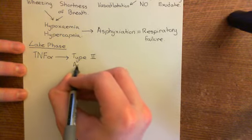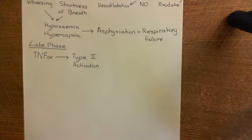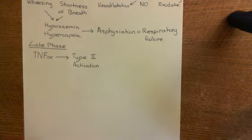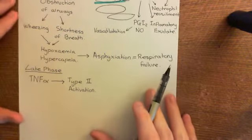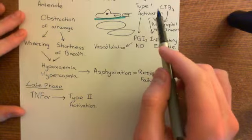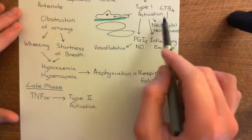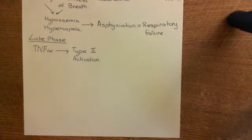Histamine caused type 1 activation; TNF-alpha causes type 2 activation, which takes much longer. Type 1 activation doesn't involve synthesis of new proteins — it involves synthesis of a few lipid molecules like prostacyclin and nitric oxide, and all proteins needed are already present — so type 1 takes minutes. Type 2 activation takes hours because it involves synthesis of a whole new set of proteins within the endothelial cells.